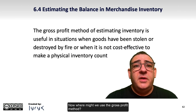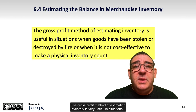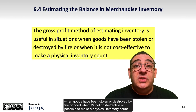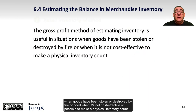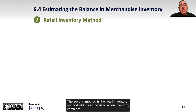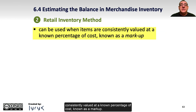Now where might we use the gross profit method? The gross profit method of estimating inventory is very useful in situations when goods have been stolen or destroyed by fire or flood, when it's not cost effective or possible to make a physical inventory count. The second method is the retail inventory method, which can be used when inventory items are consistently valued at a known percentage of cost, known as a markup.